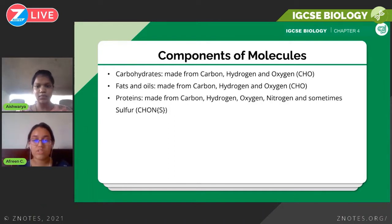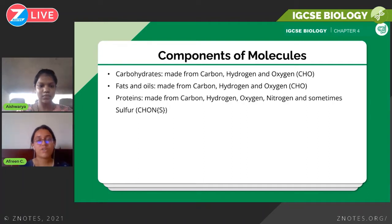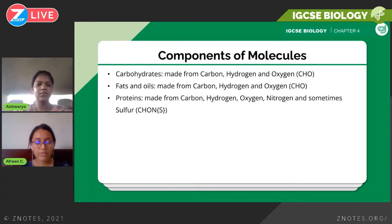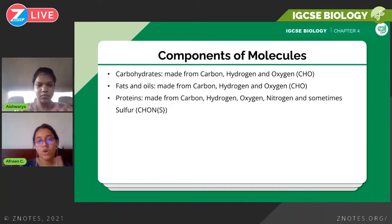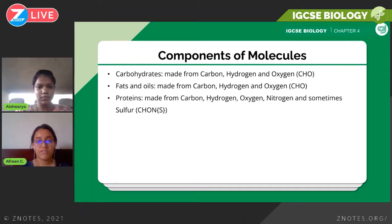However, the ratios in which these elements are present in fats and oils are different from carbohydrates. For IGCSE Biology, you just need to know the names of the elements. Moving on to proteins: proteins also have carbon, hydrogen, and oxygen — the three elements common to all three molecule types. Additionally, proteins have nitrogen, and sometimes sulfur.